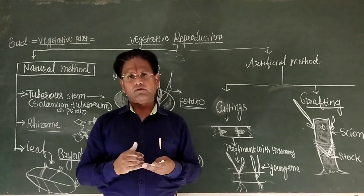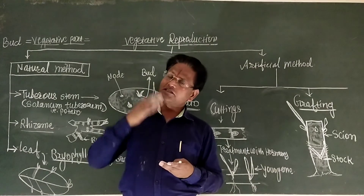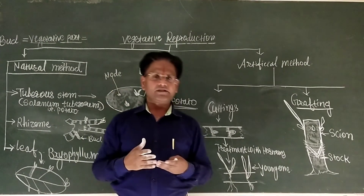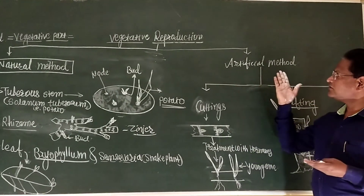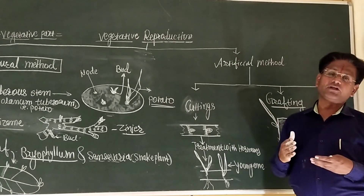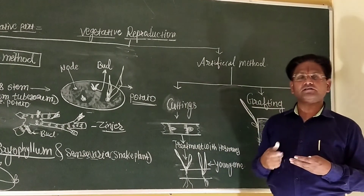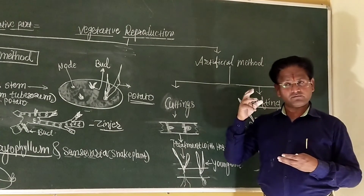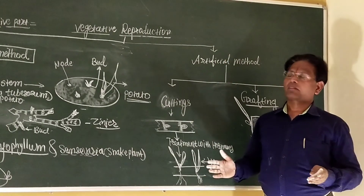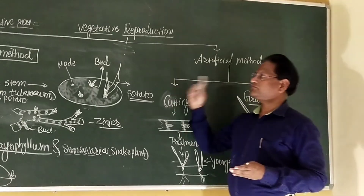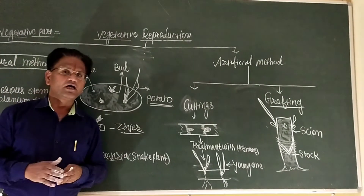Vegetative propagation allows fast multiplication of individuals. These are the natural method of vegetative reproduction and the artificial method of vegetative reproduction. Thank you.